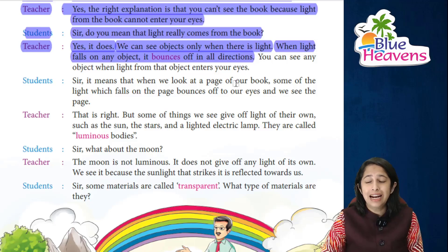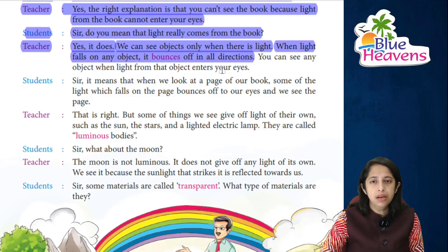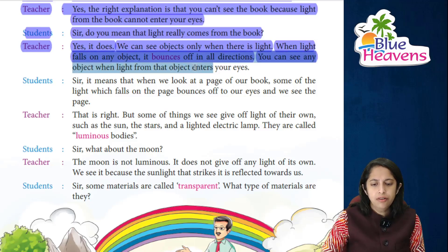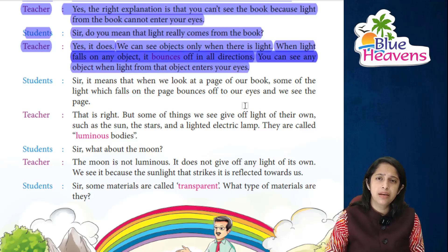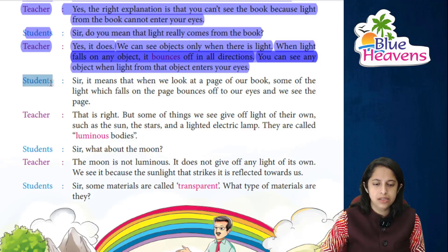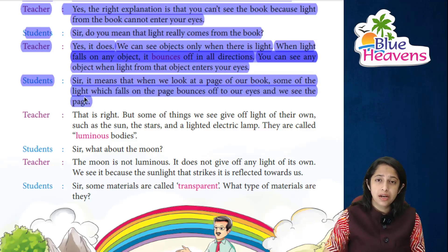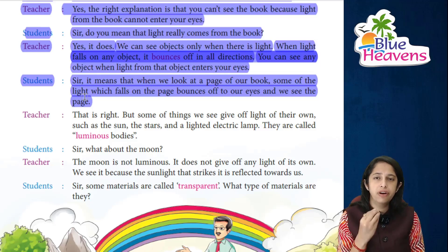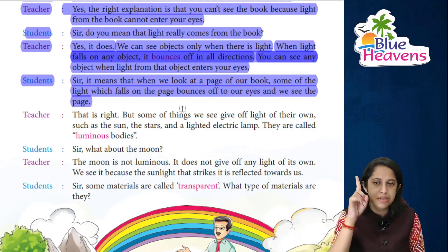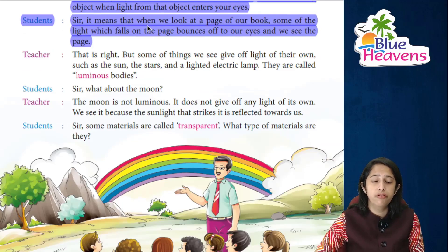You can see any object only when light from that object enters your eyes. Students say: sir, it means that when we look at a page, some of the light falling on the page bounces off to our eyes and we can see the page. 'Bounces off' means it reflects back from the object. This phenomenon is known as reflection — jabhi bhi light kisi surface pe padhti hai, wo wapas reflect hoti hai.